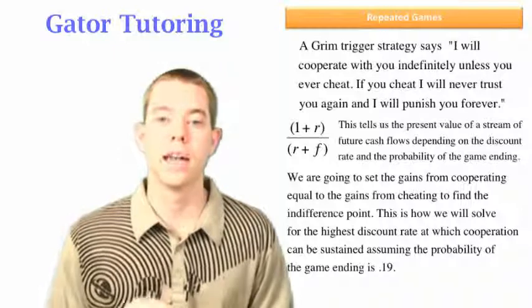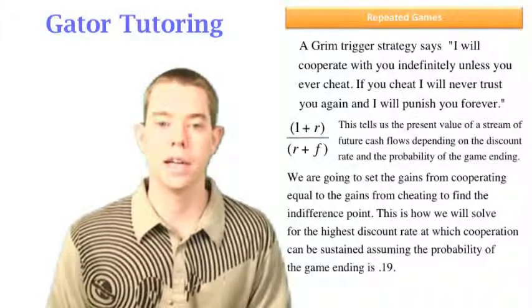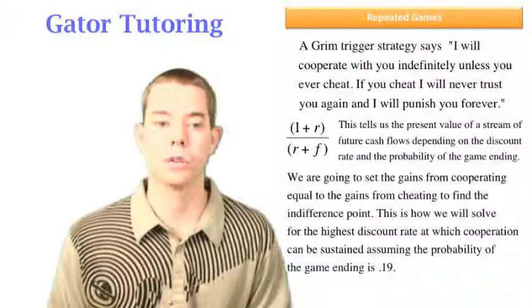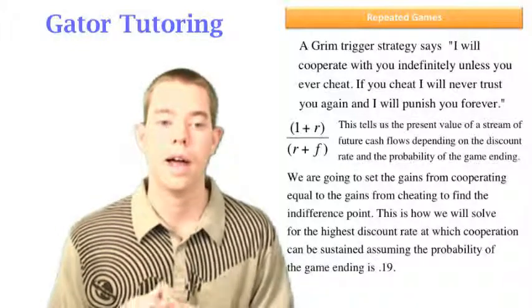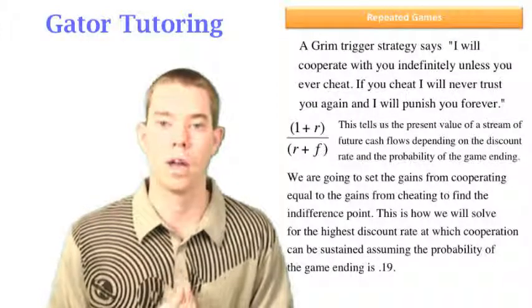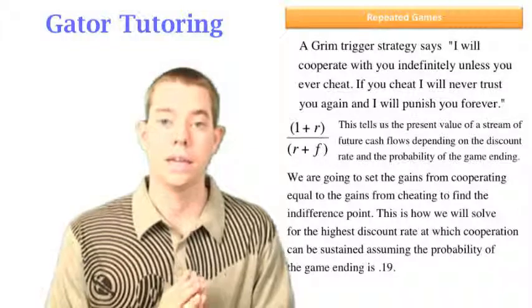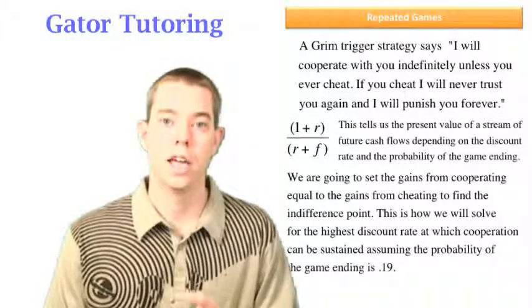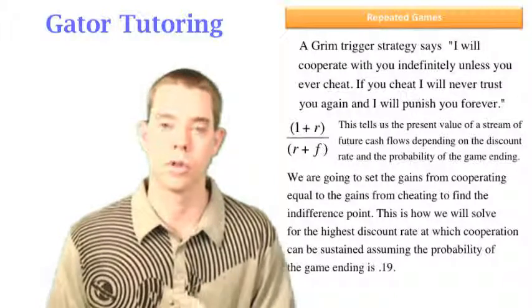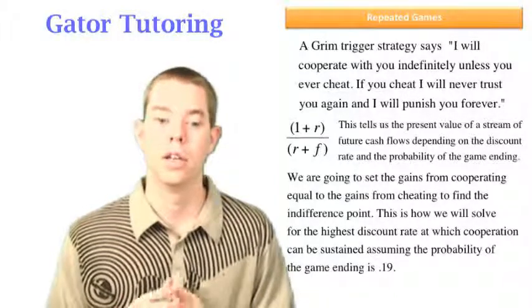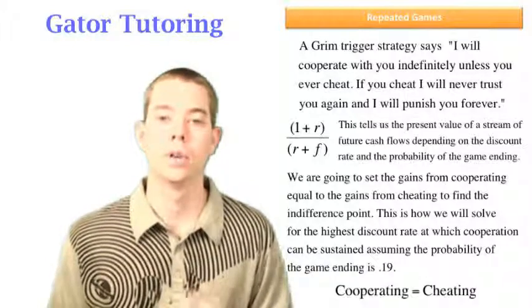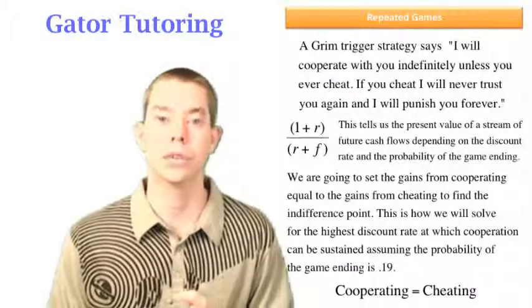What we're going to do is we're going to set the gains from cooperating equal to the gains from cheating to find the indifference point between cheating and cooperating. And this is how we will solve for the highest discount rate at which cooperation can be sustained, assuming the probability of the game ending is 0.19. So in the next question, they give us r and we're solving for f. In this question, they've given us f and we're solving for r. There's only one video, but it answers, if you know how to do it, you'll be able to answer both questions. So again, we're setting cooperating equal to cheating to solve.